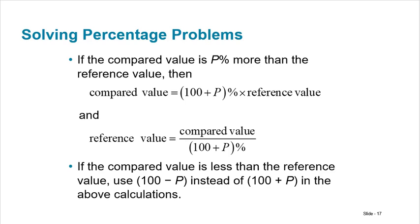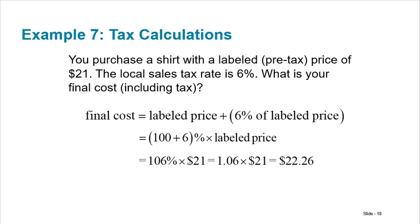If the compared value is P% more than the reference value, the compared value is just 100 plus P times the reference. More than becomes 100 plus that of; less than becomes 100 minus that of. For example, you purchase a shirt with a pre-tax price of $21 and the local sales tax is 6%. The final price is 100% plus 6%, which is 106% of the original price. So you just take 21 times 1.06 to get your final price.